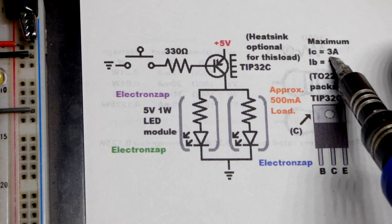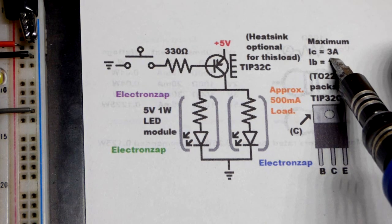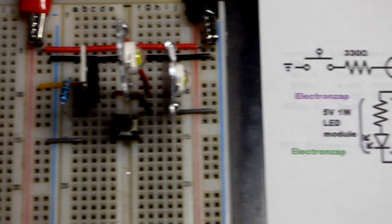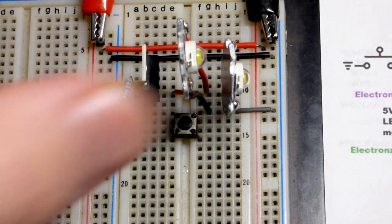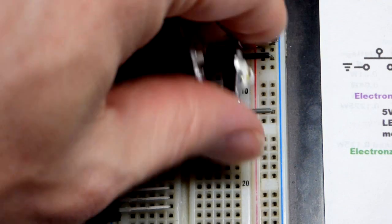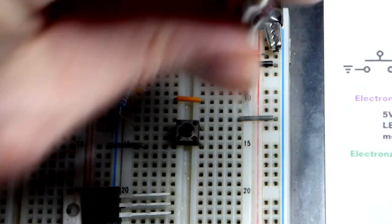But we should be able to dissipate plenty of heat. So that shouldn't be a problem because this can handle 3 amps maximum through the collector. And we're only putting about a little less than 500 milliamps. It would be close to 500 milliamps if things were perfect.